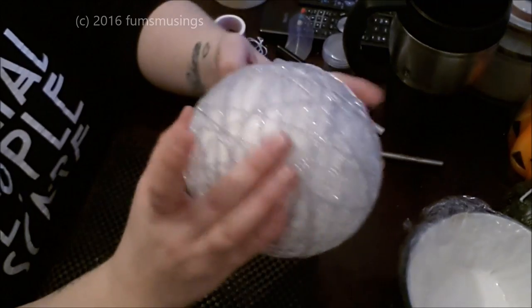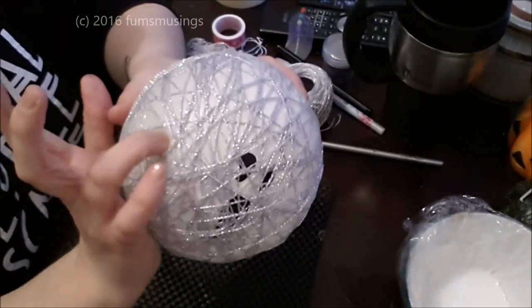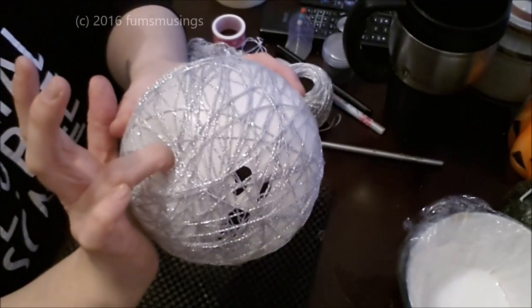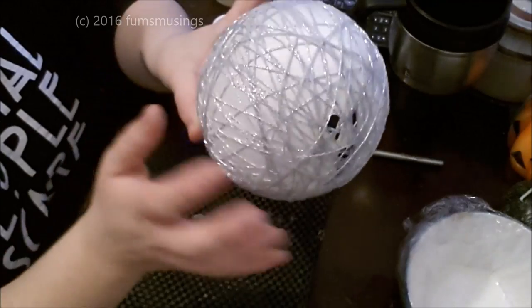You take a balloon and you dip the sparkly string in PVA glue and wrap it as many times as you can around the balloon. As you can see it forms a web pattern all over the balloon.